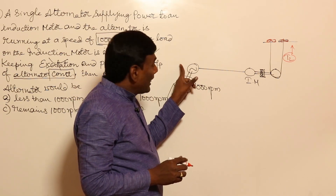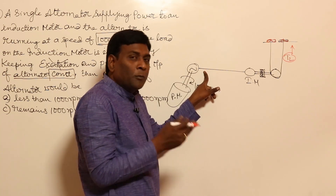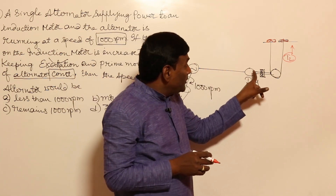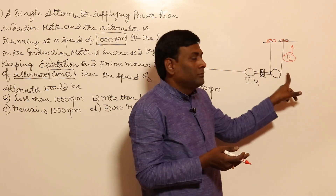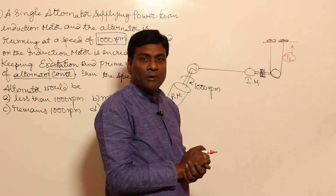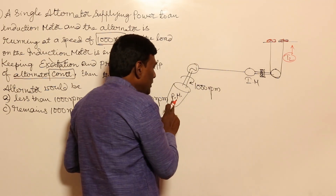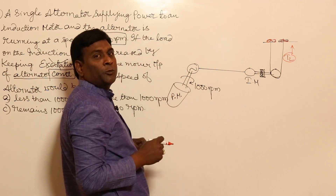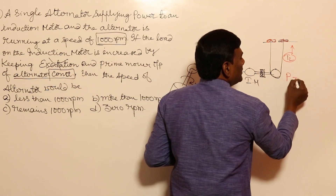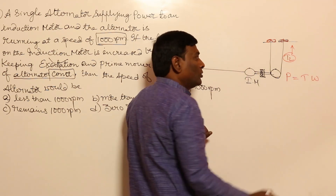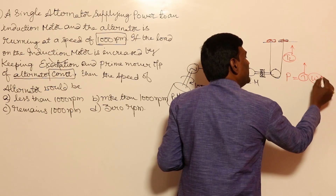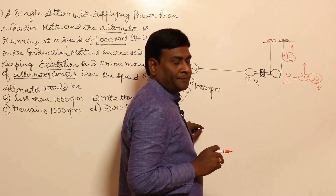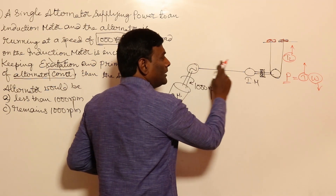The prime mover is supplying mechanical power P_mechanical, which is converted to electrical power — assuming no losses, efficiency is 100%. That electrical power is supplied to the induction motor and converted back to mechanical power for the load. Since prime mover power input is constant, power output is the same. Power equals torque multiplied by speed, so if torque increases due to increased load, speed must reduce to keep power constant.